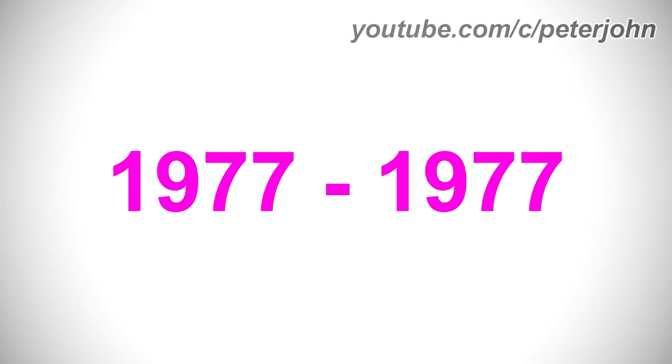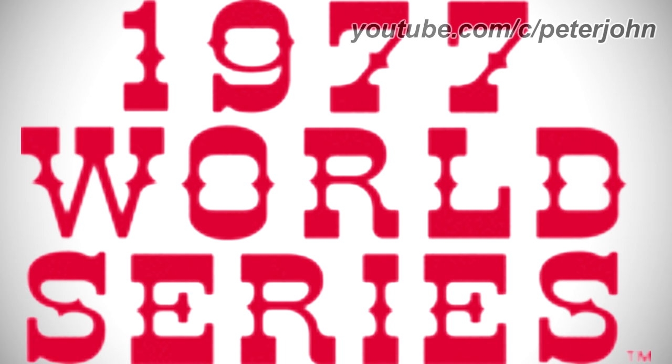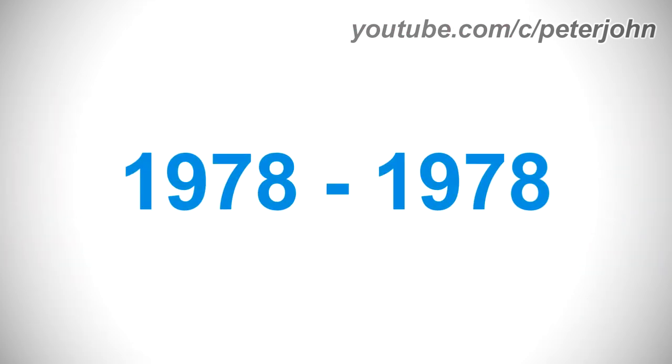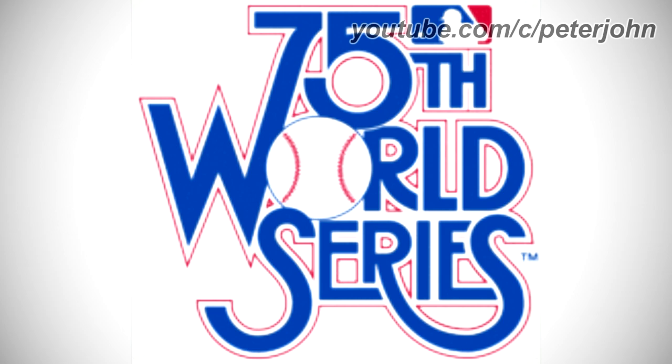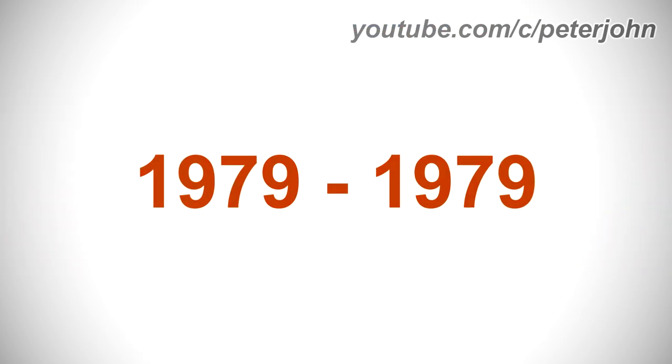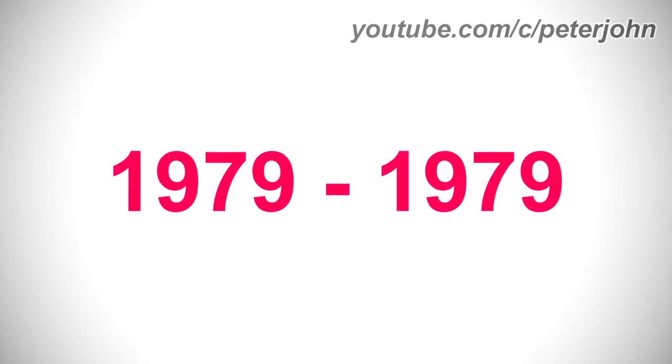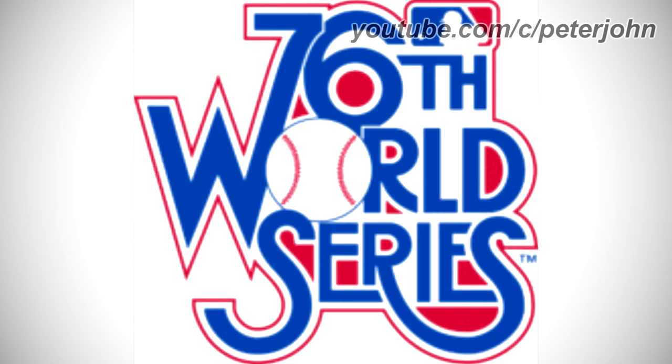1977-1977: there are the words 1977 World Series in red text. 1978-1978: there are the words 75th World Series in blue text on a red outline, except the letter O is a baseball, and above the text there is the MLB logo that consists of a blue and red rounded rectangle, and on it there is a white ball and a white man holding a white baseball bat. 1979-1979: the number 75 was replaced by the number 76, and the red outline is thicker.